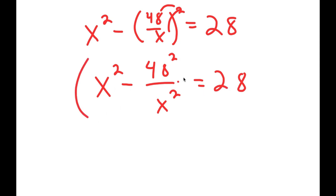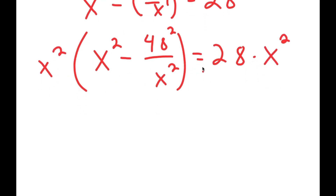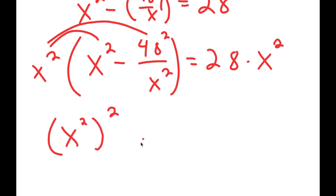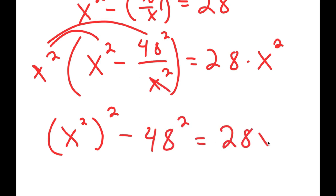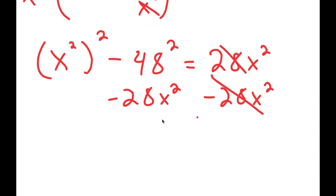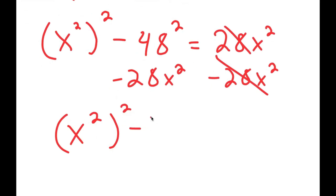Now I'm going to multiply both sides by x squared. Distributing on the left: x squared times x squared is x to the fourth. The minus 48 squared over x squared times x squared — these cancel — giving minus 48 squared. This equals 28x squared. Subtracting 28x squared from both sides gives x to the fourth minus 28x squared minus 48 squared equals 0.